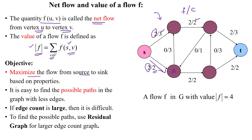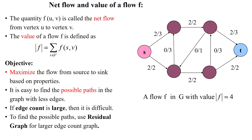Based on these, we can calculate possible paths from source to sink using fewer edges. If the edge count is large in the flow network, it is not easy to calculate the flow values directly, so we use residual graphs to handle networks with a large number of edges. In this flow network, we are passing four units of quantity from source to sink.